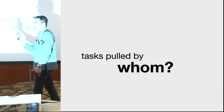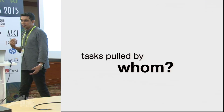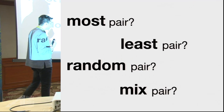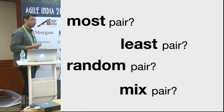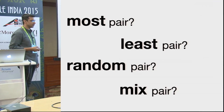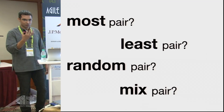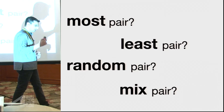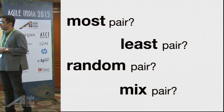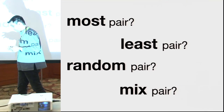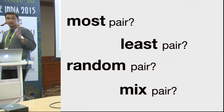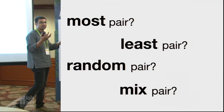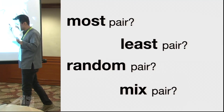Tasks are pulled by the team, and every morning as a team we go up to our wall and someone needs to do the assignments - we pick up tasks for ourselves. Who will be picking up the task, and which pair? There were multiple options: most qualified pair, least qualified pair, random pair, or mixed pair. Based on conventional wisdom, the most qualified pair can always pick up the task - if it's a database change, the database expert picks it up. Least qualified means someone who has not worked on this before.